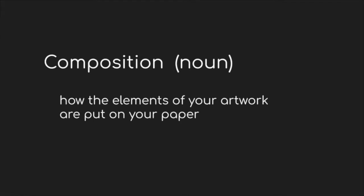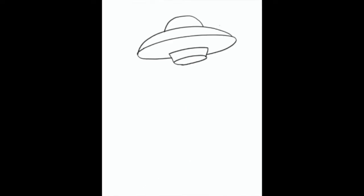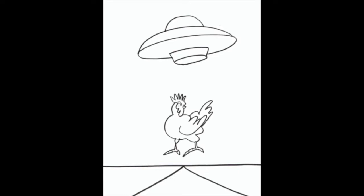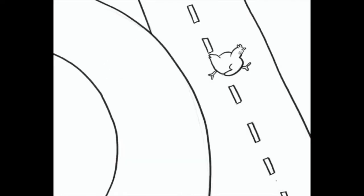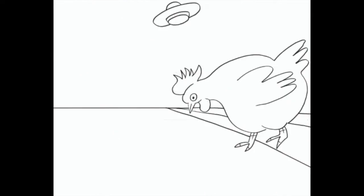Composition is how the elements, or what you're going to draw or paint, of your artwork are put on your paper. So if I want to draw a chicken, a road, and a spaceship, these three things are the elements of my artwork. How I put them on my paper can change, and that changes my composition.